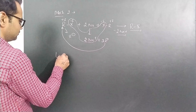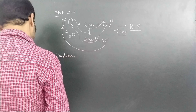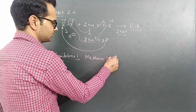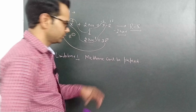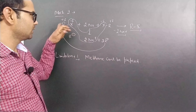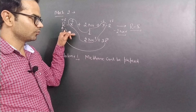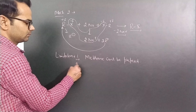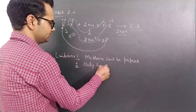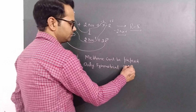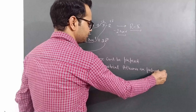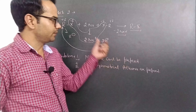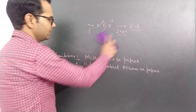Actually, the real mechanism is the free radical mechanism. Now, what are the limitations of this reaction? Limitation number one: methane cannot be prepared by the Wurtz reaction, because even the smallest alkyl group has one carbon, and combining two of them gives two carbons — so methane cannot be formed. Second limitation: only symmetrical alkanes are prepared; unsymmetrical alkanes cannot be prepared by this method.